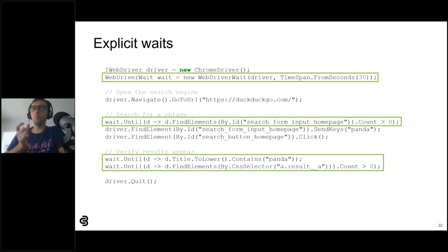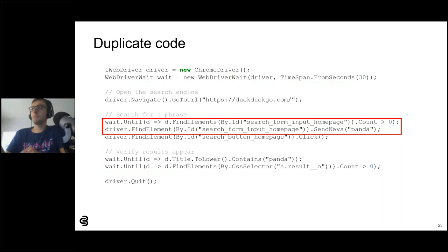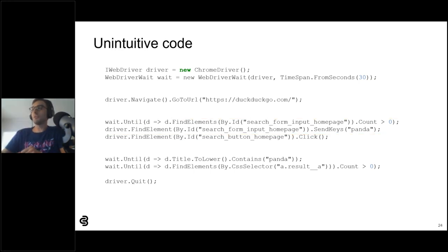Each wait.Until call takes a function that returns true when the condition is satisfied. These waits are necessary, but they cause new problems. First, they cause duplicate code because web element locators are used multiple times — notice how SearchFormInputHomepage is called twice. Second, raw calls with explicit waits make code less intuitive. If you remove the comments, what's left is a wall of text that's difficult to understand at a glance.